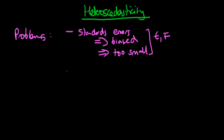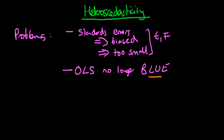The second problem is that under the presence of heteroscedastic errors, OLS estimators are no longer BLUE. In particular, there are other linear unbiased estimators which are better than least squares.